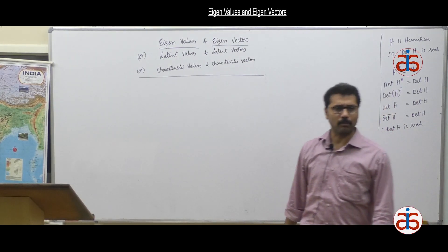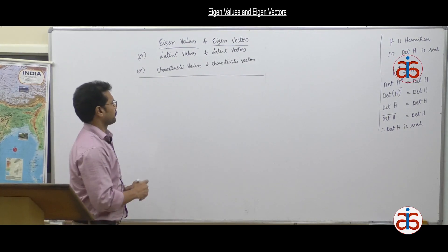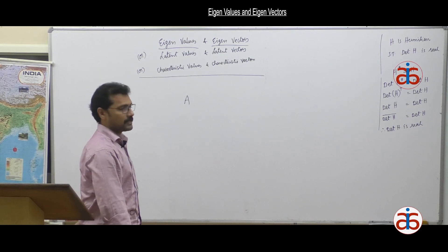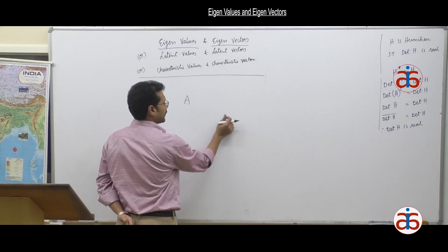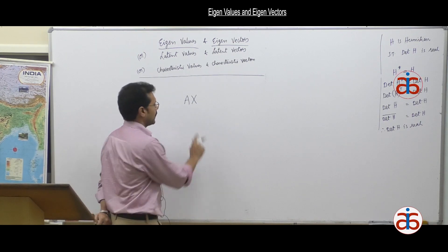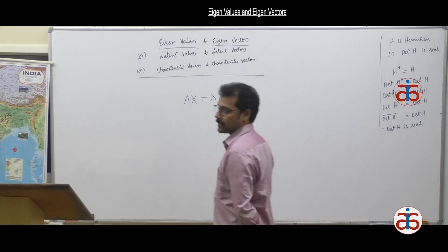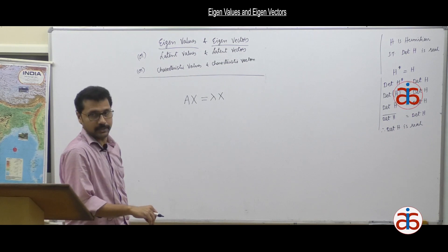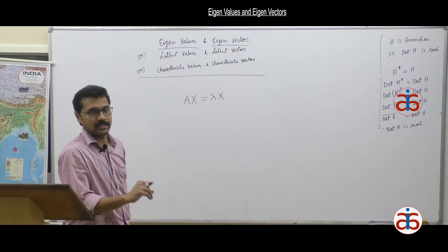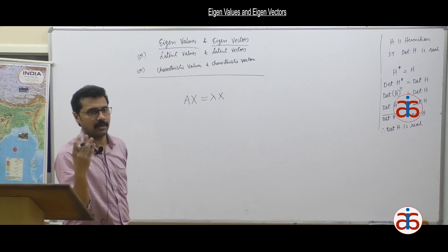There is something called the eigenvalue problem in mathematics. For a given square matrix A, if you can find nonzero vectors X such that Ax equals lambda x for some scalars lambda, such a problem is called an eigenvalue problem.